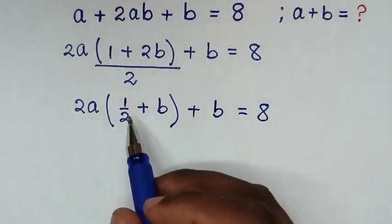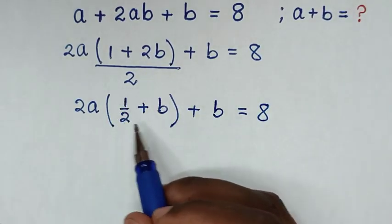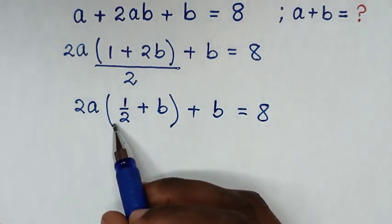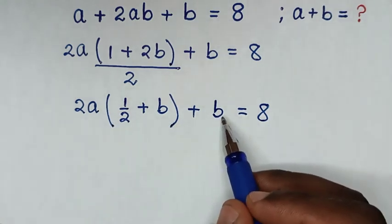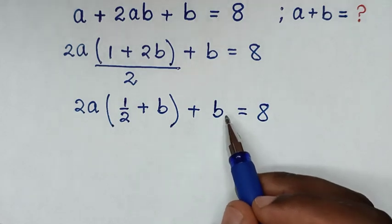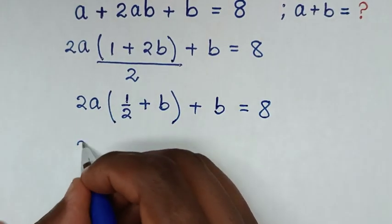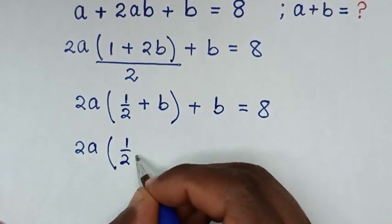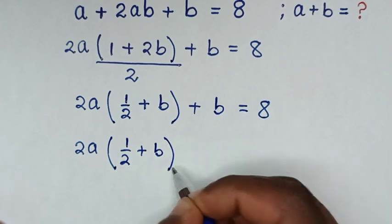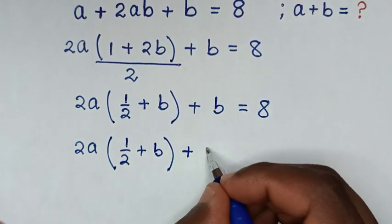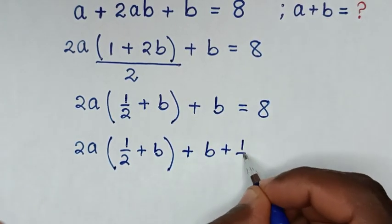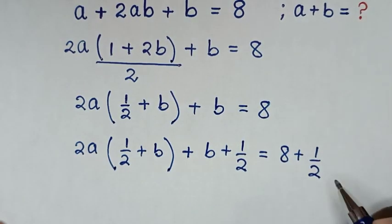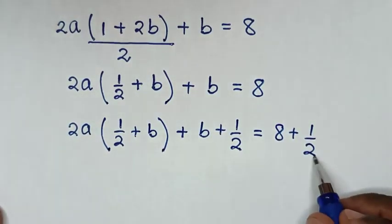Then in the next step, from here inside the bracket is ½ + b, and here we have b. So to make ½ + b in common, in here we will add ½ to both sides. So it will be 2a bracket, 1 over 2 plus b, bracket, then plus b plus ½ is equal to 8 plus ½.